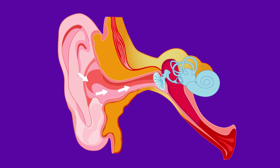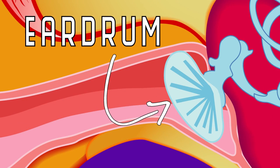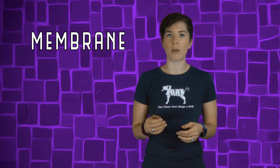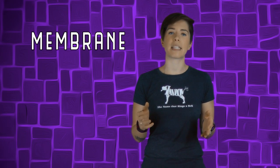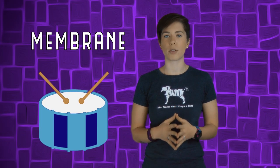The vibrations bounce into your ear canal, where they hit the eardrum. The eardrum is called that because it has a membrane, which is just a thin layer, like the plastic that covers the drum surface.